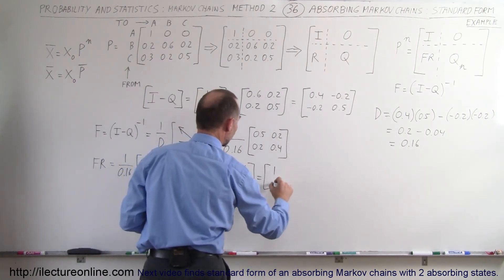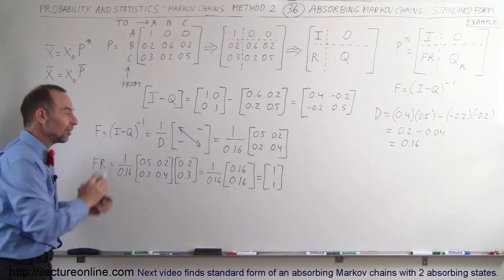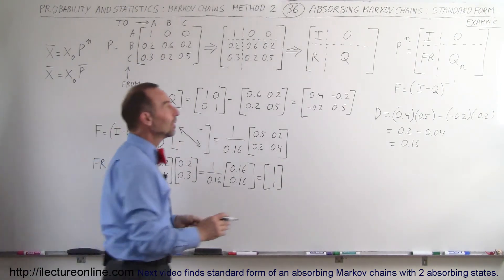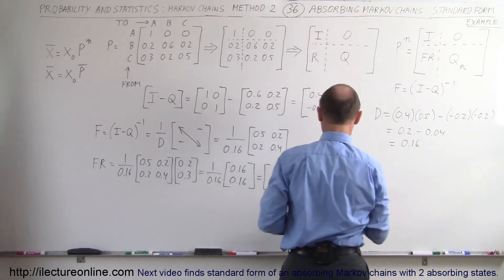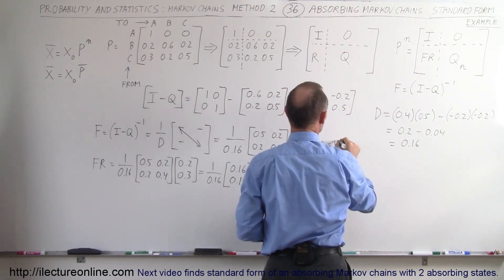This ends up being 1 and 1 which is what we expected, but at least now you can see that we actually got that by calculating that matrix. Now you can see when we take this matrix right here, so P to the N power when N is very large.